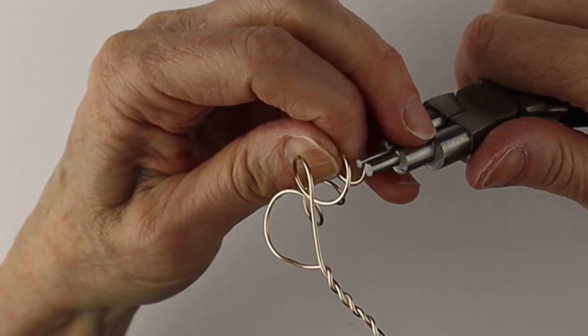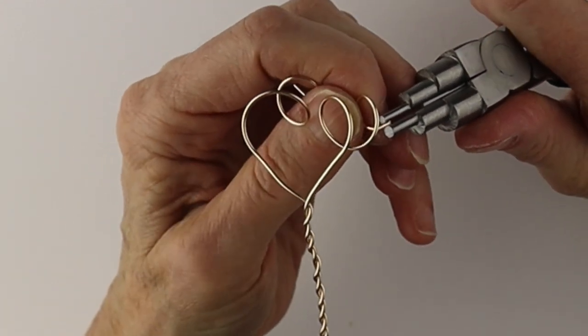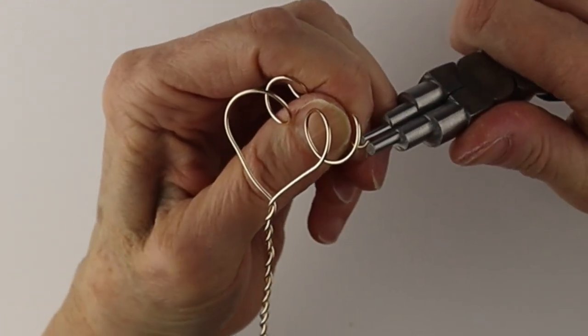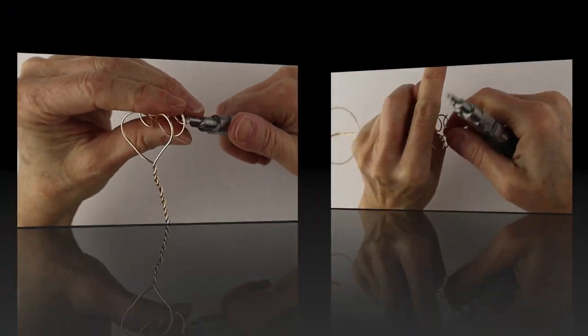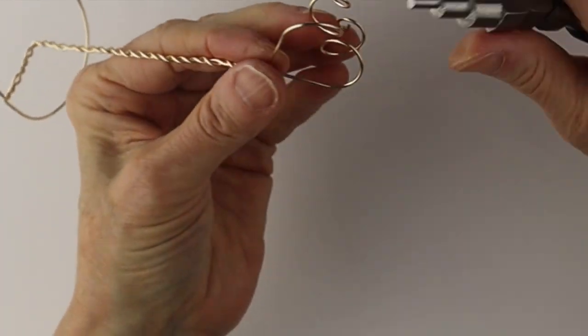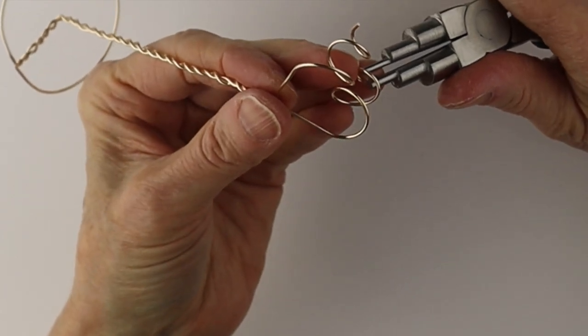Just adjust them so that the same height and then get your looping pliers or your round nose pliers and bring that end in into a closed loop. So we're going to do that on both sides.